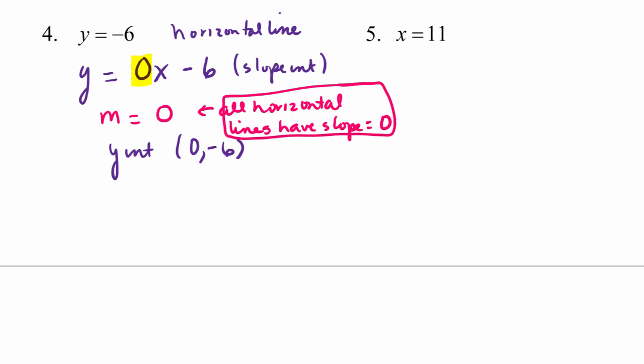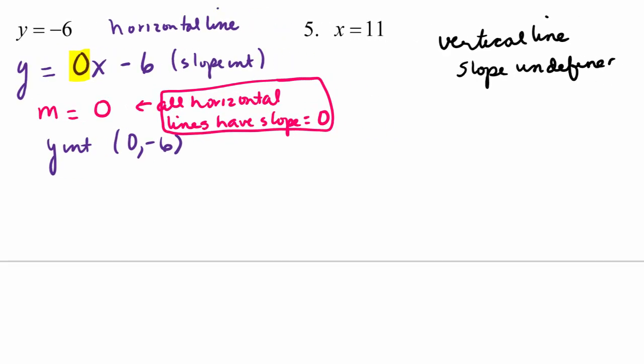Now compare that to problem number 5. This is a vertical line now. No y-variable in the equation. So talking about rewriting this in slope-intercept form makes no sense whatsoever. Actually, as you know, vertical lines have slope that is undefined. So all vertical lines have undefined slope.